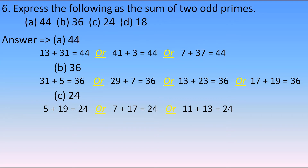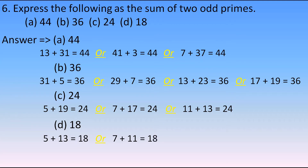For 18, it can be expressed as 5 plus 13 or 7 plus 11. These are two ways to express 18 as the sum of two odd primes. While writing in the exam, you can use only one way — there is no need to write all the ways.